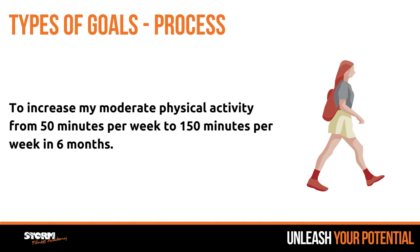Now, we've got different types of goals. The ones we just looked at would technically be what we call performance goals, but you can also have process goals. Process goals are quite nice to start people off, especially beginners who are new to exercise — their goal simply is to turn up and get the programme done. A process goal is something you have complete control over. This example: 'increase my moderate physical activity from 50 minutes per week to 150 minutes per week in six months,' gradually progressing the minutes every week until they get to about the 150 mark.